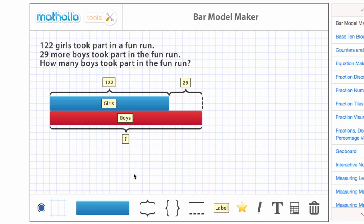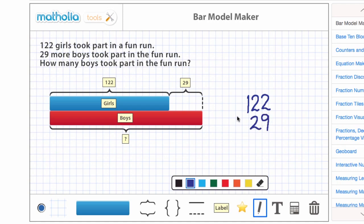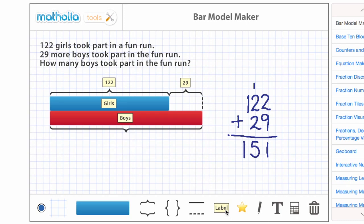We can see that 29 more boys took part in the fun run. We can use addition to find the total number of boys. We add 122 and 29. 151 boys took part in the fun run.